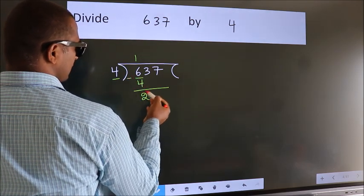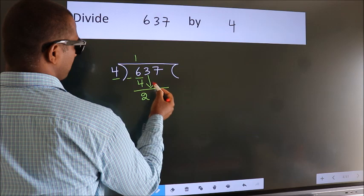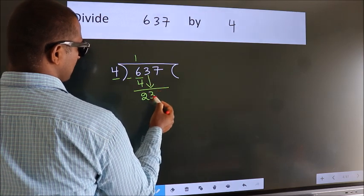After this, bring down the beside number. So 3 down. So 23.